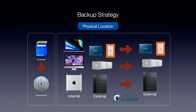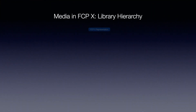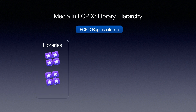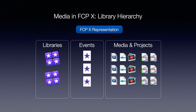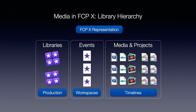Once you've decided on the physical location for your media, you then need to figure out how you want to organize your media inside Final Cut Pro 10. Let's do a quick overview of the library hierarchy in Final Cut Pro. Media in Final Cut Pro 10 is organized first at the top level in libraries. Libraries contain events, and events contain both media and projects. We think of libraries as self-contained production units — each library can represent a specific production that you're working on. How you break up your productions into library units is really up to you. Events you can think of as workspaces within a production unit, and projects are the timelines — the end result of what you build in your edit.